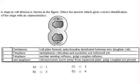Let us try to identify the stage of cell division from the given figure. Because of the centriole, we can conclude that this is an animal cell.